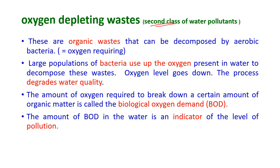The second class of water pollutants are called oxygen depleting wastes. These are organic wastes that can be decomposed by aerobic bacteria, which require oxygen. Large populations of bacteria use up the oxygen present in water bodies to decompose these wastes, causing the oxygen level to go down. The amount of oxygen required to break down a certain amount of organic matter is called the Biological Oxygen Demand, or BOD.